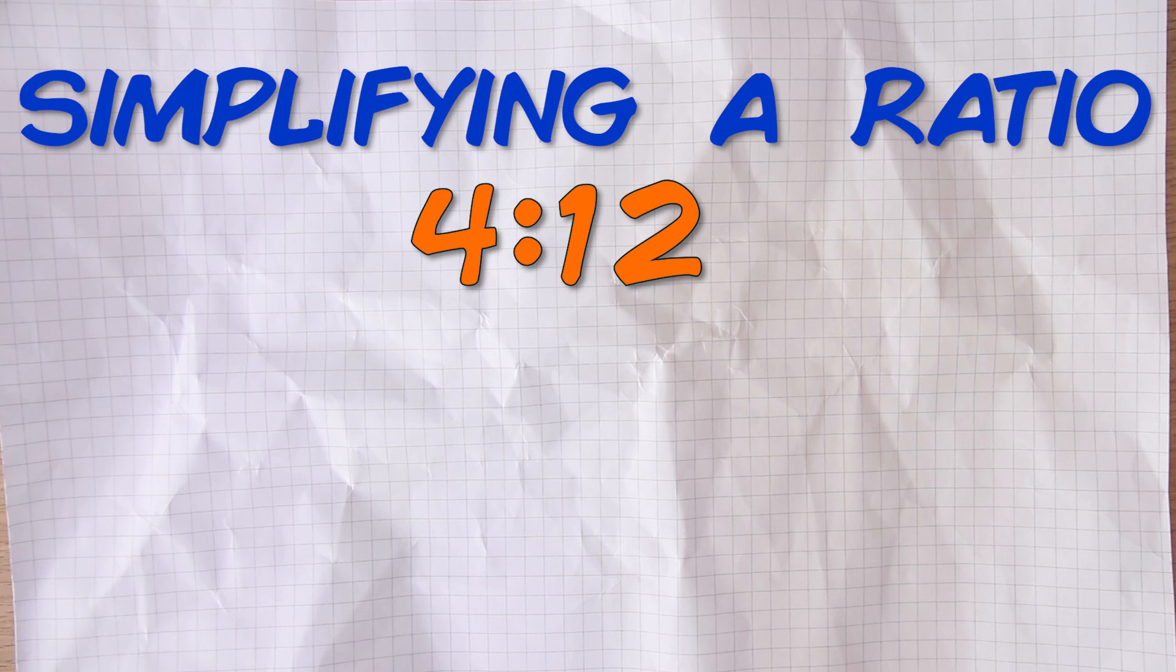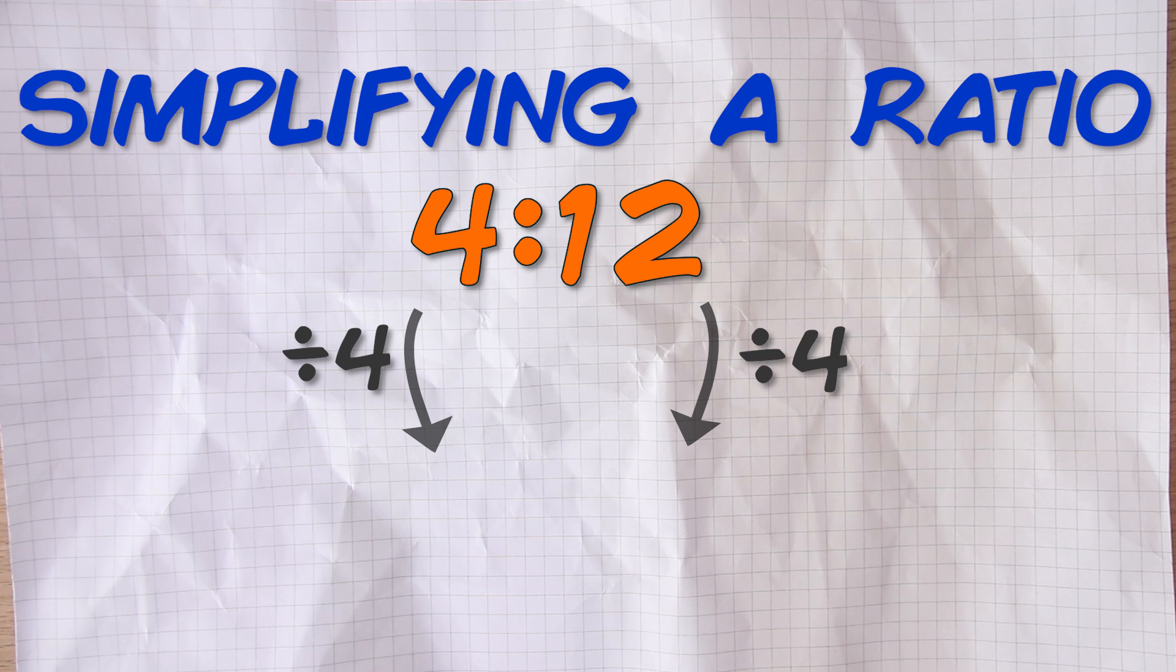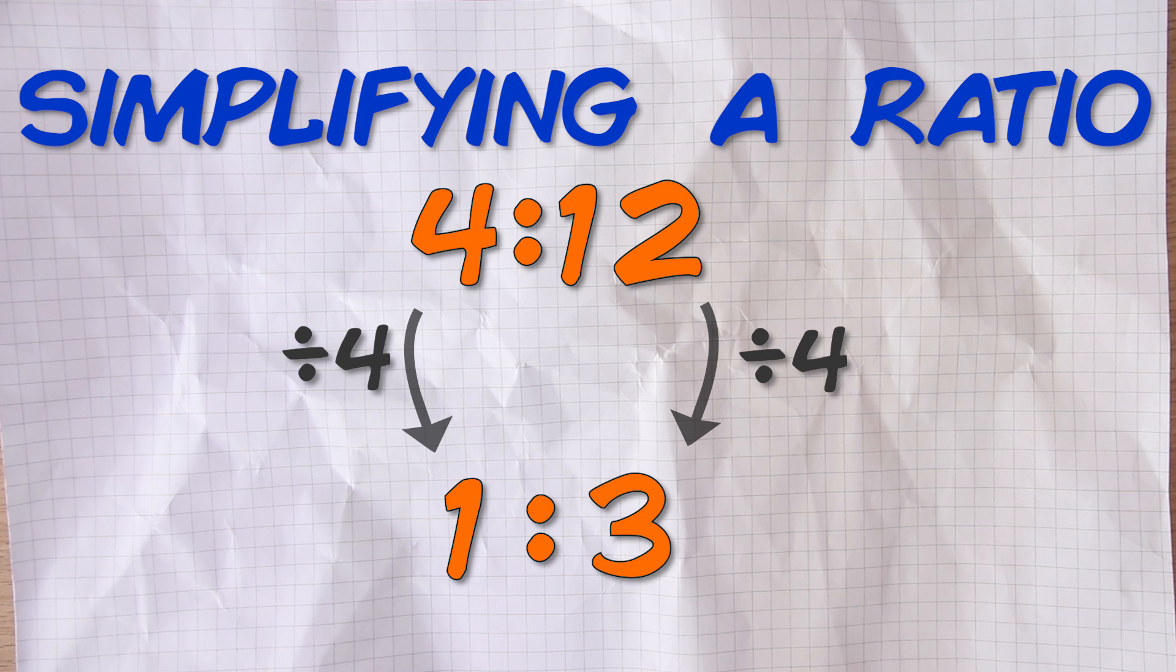In this first example, 4 to 12. Four goes into both those numbers, they can both be divided by 4, so that's what we do - divide them both by 4. So how many times does 4 go into 4? Well just once. And how many 4s go into 12? It goes in three times so we end up with a ratio of 1 to 3.